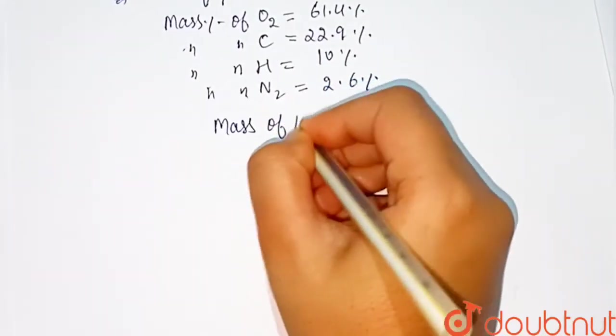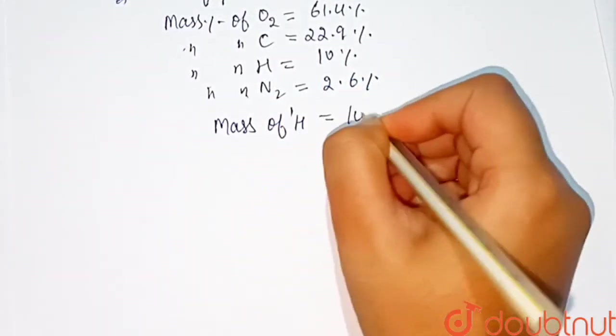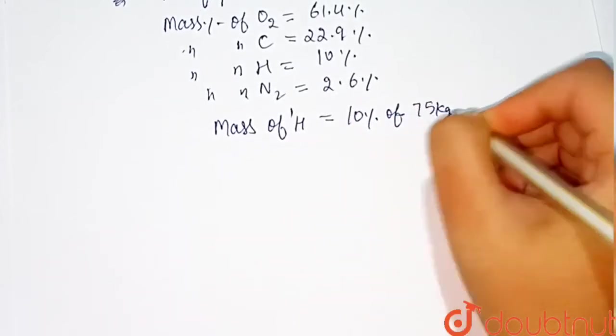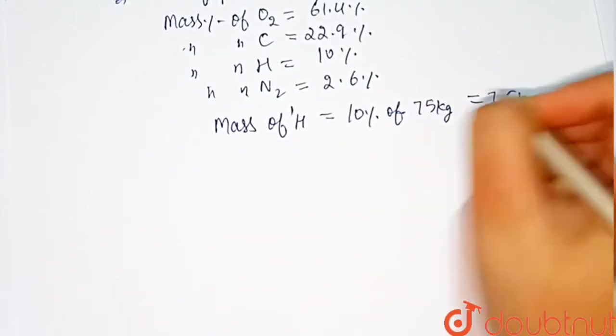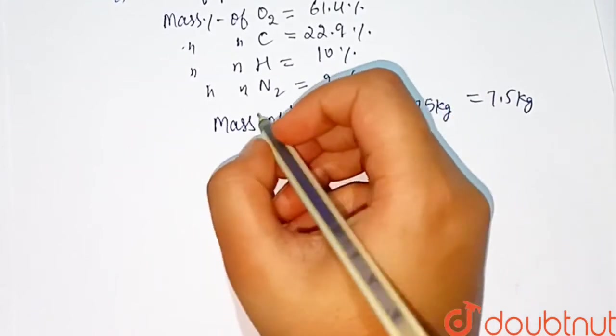So mass of H1 equals 10% of 75 kg, which is equal to 7.5 kg. Since H2